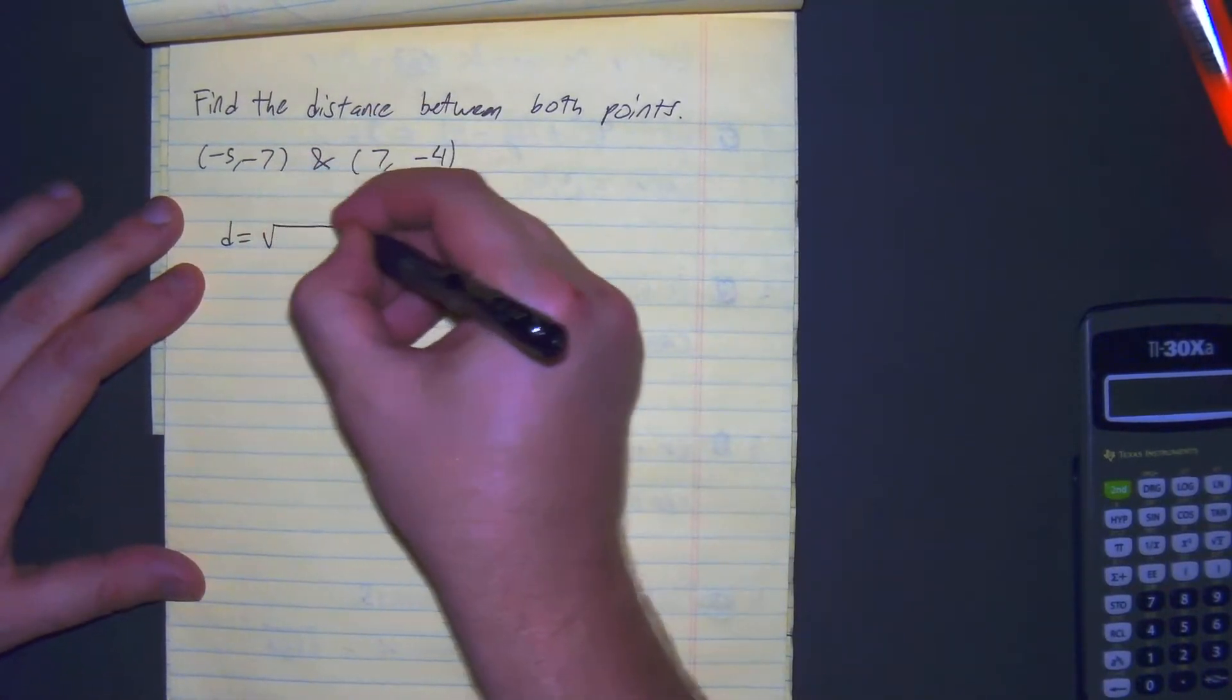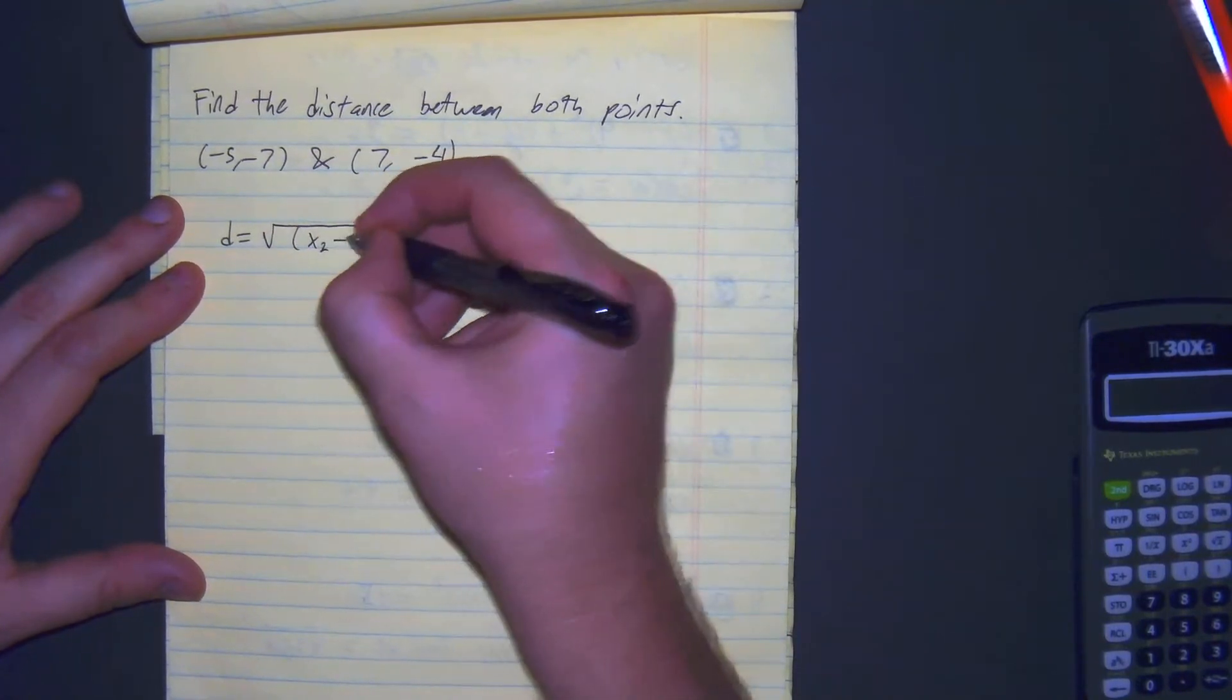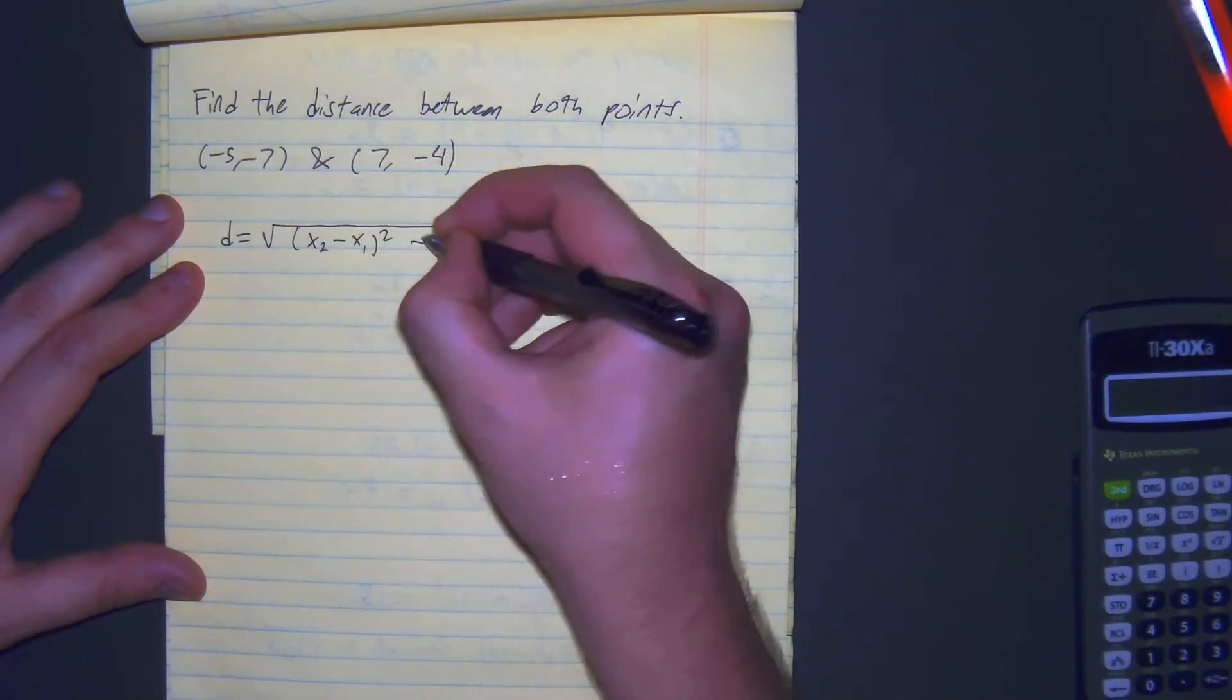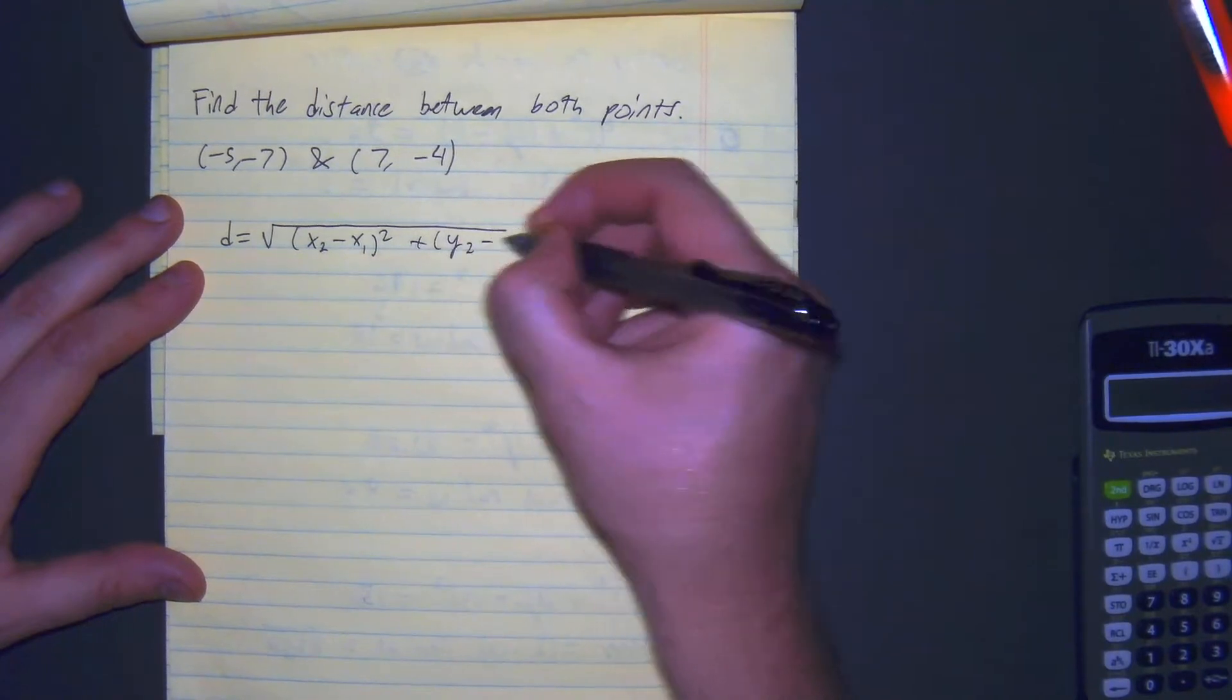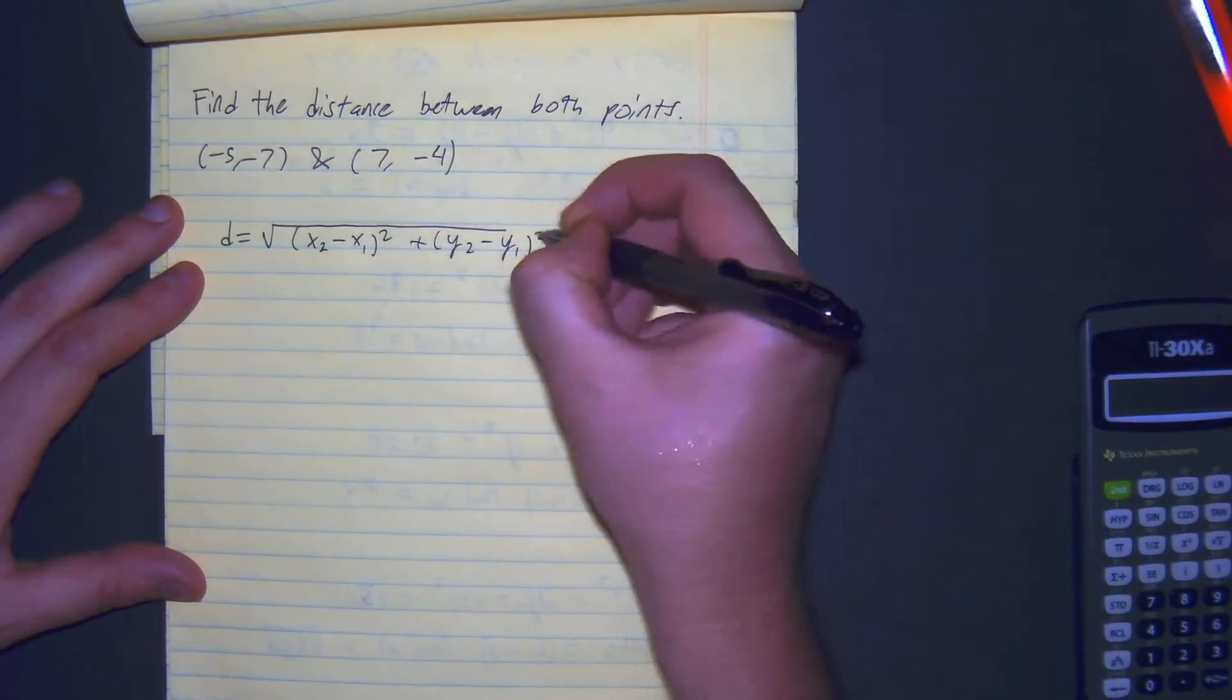Distance is equal to the square root of x sub 2 minus x sub 1 squared plus y sub 2 minus y sub 1 squared.